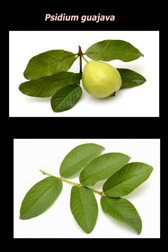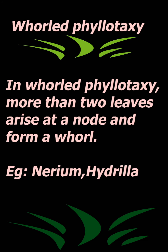The third type is whorled phyllotaxy. In whorled phyllotaxy, more than two leaves arise at a node and form a whorl. Examples include nerium and hydrilla.